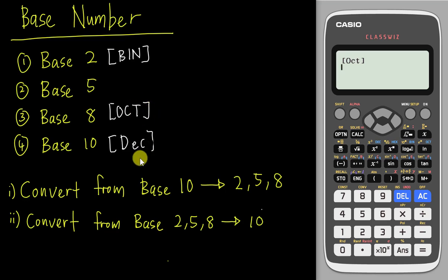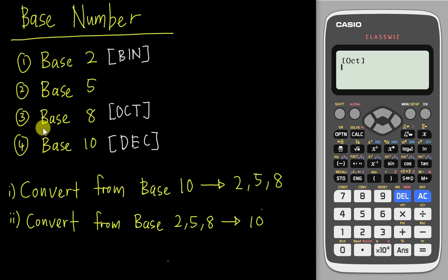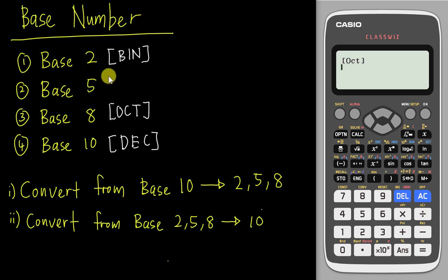So just remember: base 2 is BIN, base 8 is OCT, and base 10 is DEC. Therefore, if you see base 5 in the exam, you need to do it manually — you cannot use this calculator.